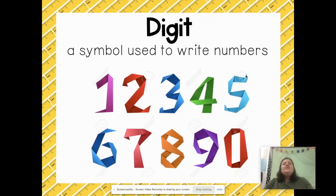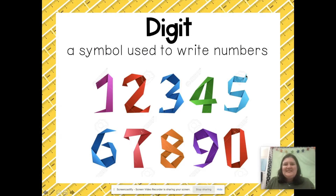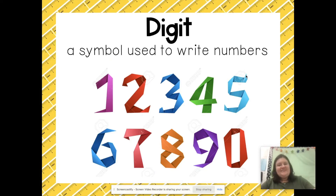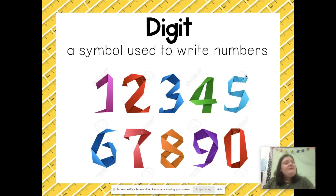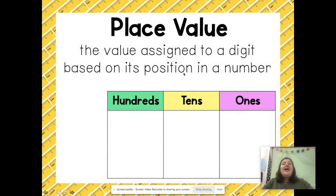The first thing we're going to review is: what exactly is a digit? A digit is a symbol that we use to write numbers, such as 1, 2, 3, 4, 5, 6, 7, 8, 9, and 0. All of those are digits, and where we place those digits is very, very important because we have place value.